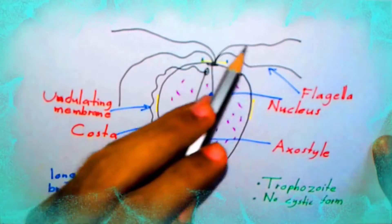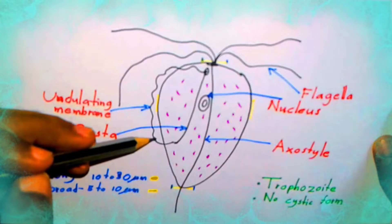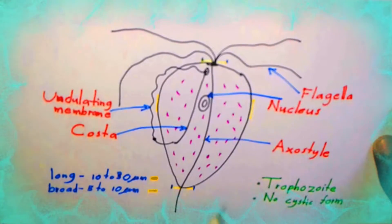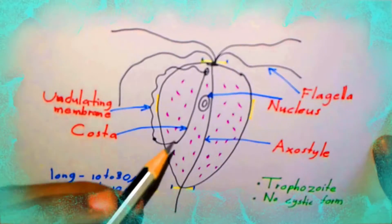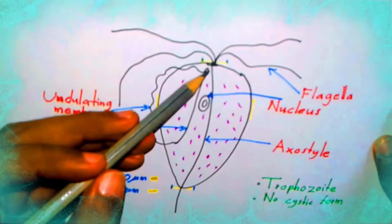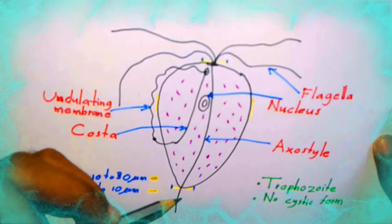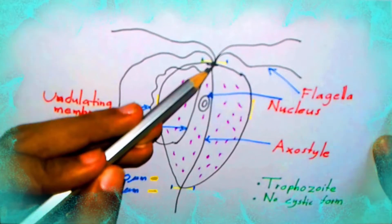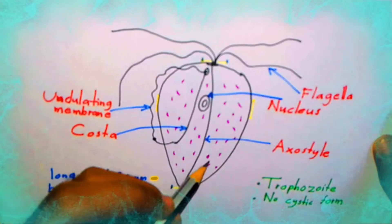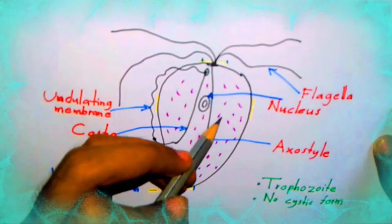It has four anterior flagella and a short undulating membrane reaching up to the middle of the body, with a pip running along the outer margin of the undulating membrane, which is supported at its base by a flexible rod called the costa. A prominent axostyle runs throughout the length of the body and projects posteriorly. The cytoplasm shows prominent granules, which are most numerous alongside the axostyle and costa.